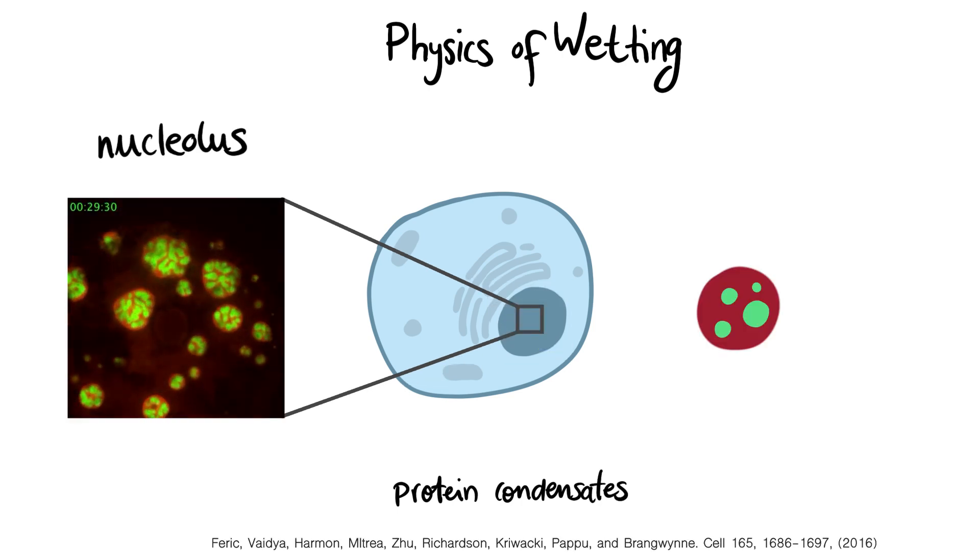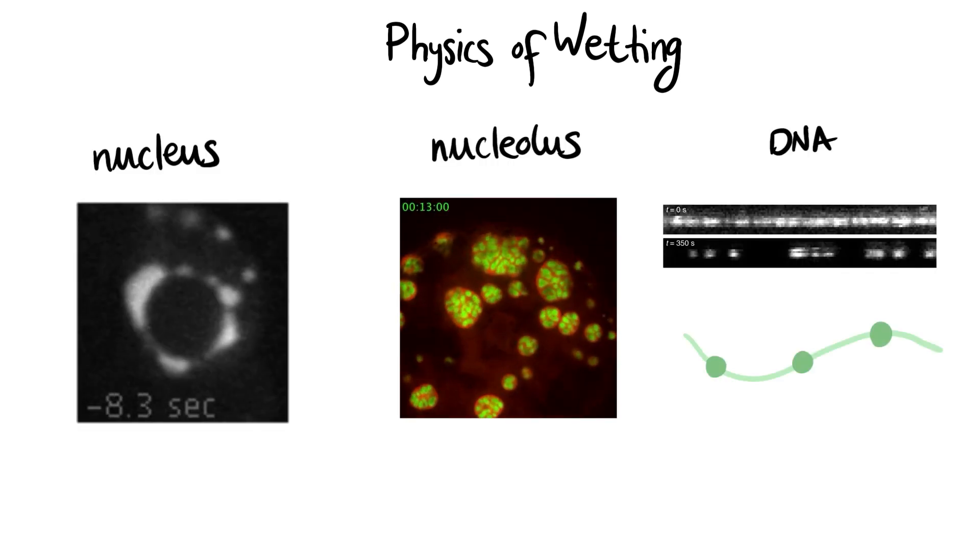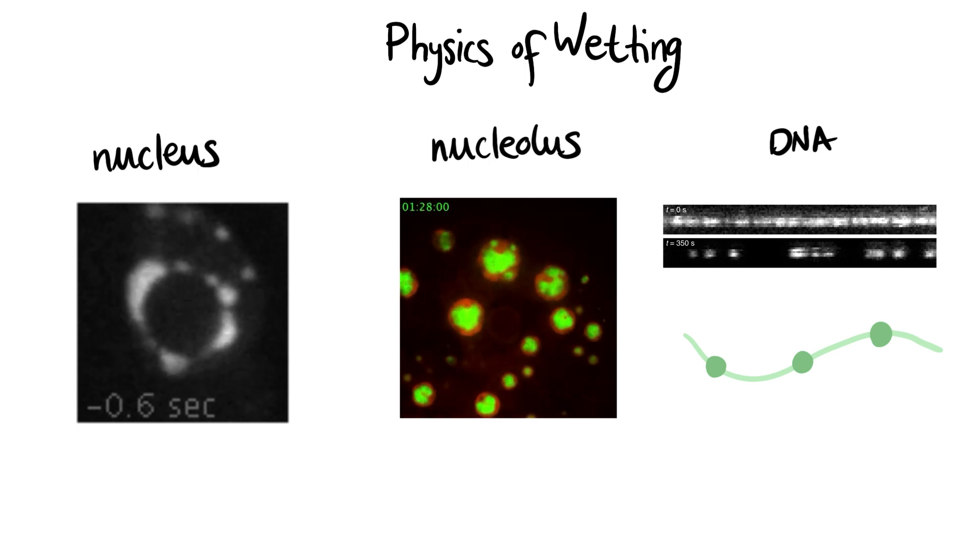Inside the nucleus, a structure called nucleolus is made of droplets completely wetting and coating other droplets. Also, protein condensates have been shown to wet specific locations of the DNA's surface, which might help regulate transcription. Researchers are starting to reveal the role of wetting phenomena in cells and how the physics of wetting may help understand it.